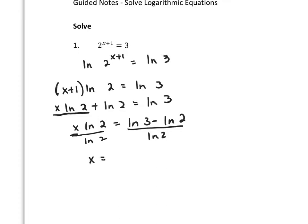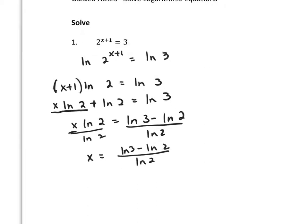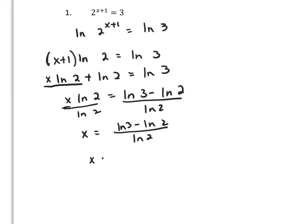That gives me x equals (ln 3 - ln 2) divided by ln 2. Using my calculator, x is about 0.5850.